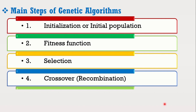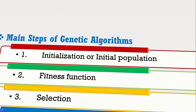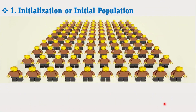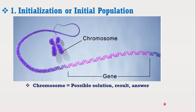Step one is initialization or initial population. The genetic algorithm starts by generating an initial population, which consists of a set of individuals where each individual is a solution to the problem you want to solve. The initial population consists of all the probable solutions to the given problem. An individual is characterized by a set of parameters known as genes. The genes are joined into a string to form a chromosome, which represents one of the possible solutions.